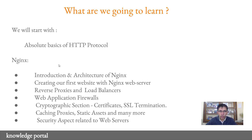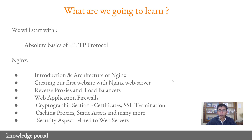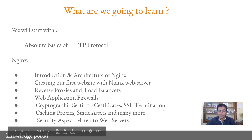In terms of what we are going to learn: we begin with the HTTP protocol, then look into the introduction and architecture of the Nginx web server. After that, we create our first website using Nginx as a web server, then move into more advanced configuration like reverse proxies and load balancers, followed by web application firewall. We also have an entire section on cryptography covering certificates, certificate management, SSL termination, and then caching, proxies, and static assets.